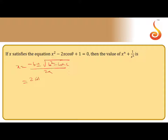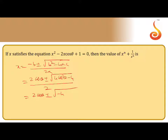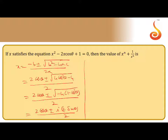Applying the formula: x equals 2·cosθ plus or minus root over 4·cos²θ minus 4, all divided by 2. This simplifies to 2·cosθ plus or minus root over minus 4 times (1 minus cos²θ), divided by 2. That gives 2·cosθ plus or minus i·2·sinθ, divided by 2, because root of minus 1 is i and root of sin²θ is sinθ, root of 4 is 2. So finally x equals cosθ plus or minus i·sinθ.